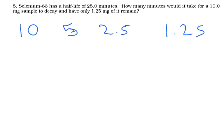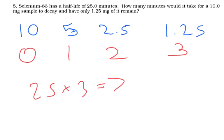So how many half-lives have we gone through? Well, this is the sample to begin with. After one half-life, we'd have five. Two half-lives, we'd have 2.5. After three half-lives, we'd have 1.25. Now, each half-life is 25 minutes. So 25 times by three is going to be 75 minutes or one hour and 15 minutes.